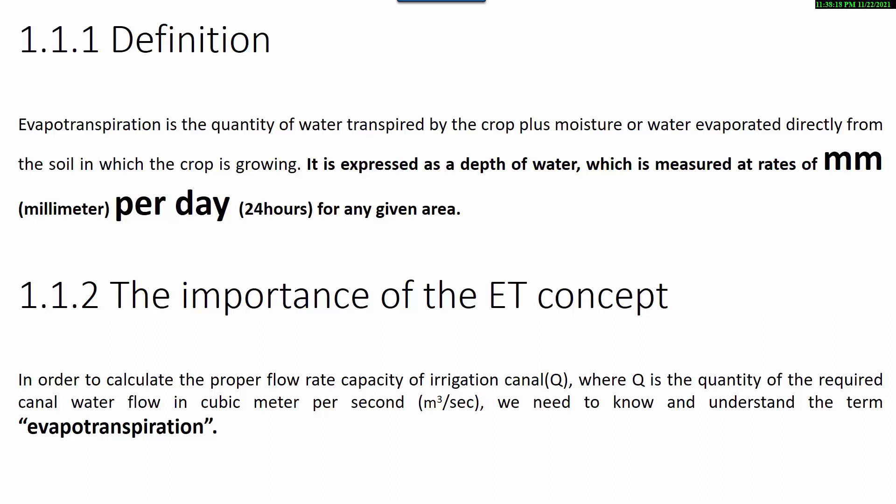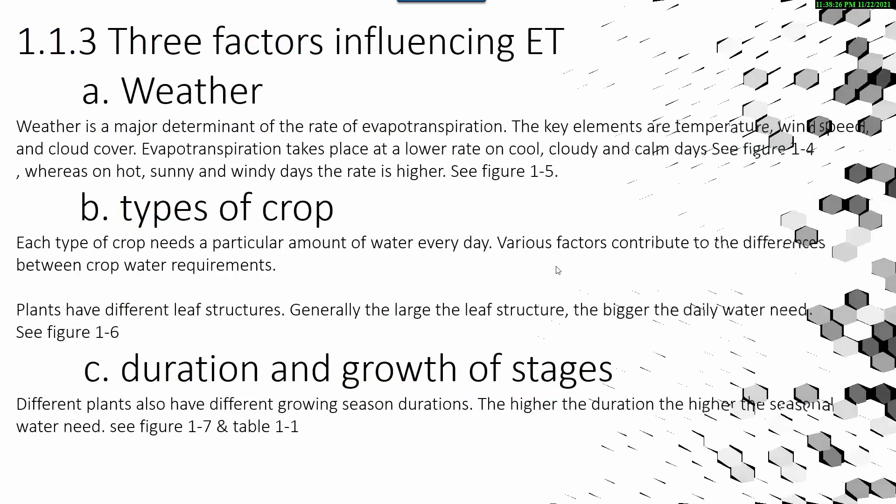Three factors influencing evapotranspiration: weather, types of crop and duration, and growth stages. Weather is a major determinant of the rate of evapotranspiration. The key elements are temperature, wind speed, and cloud cover.